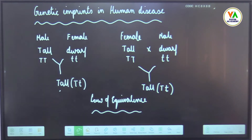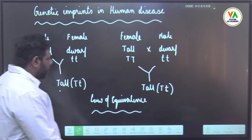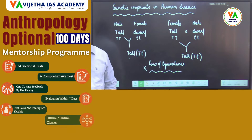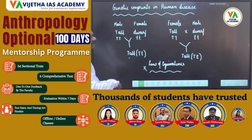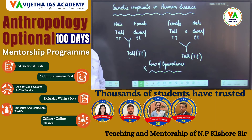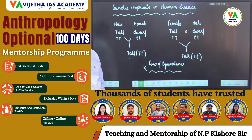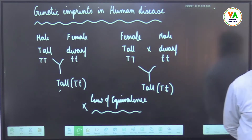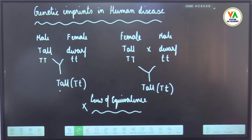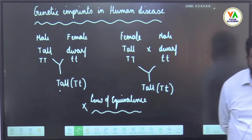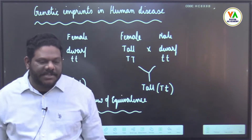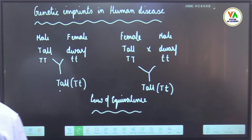Genetic imprints do not follow the Law of Equivalence because expression depends on whether the gene is of paternal or maternal origin. If it is of paternal origin it is expressed in one manner; if maternal, it expresses in another manner. According to Mendel's Law of Equivalence, it does not matter which parent contributes the dominant gene — it invariably expresses itself in the next generation. Genetic imprints violate this.